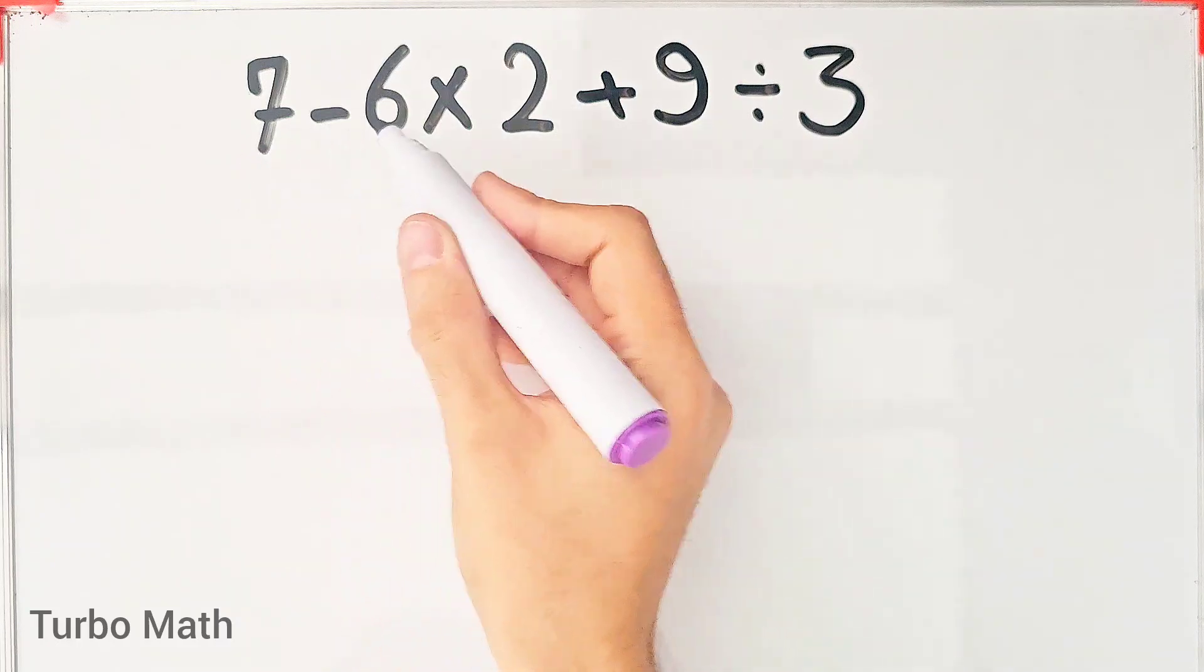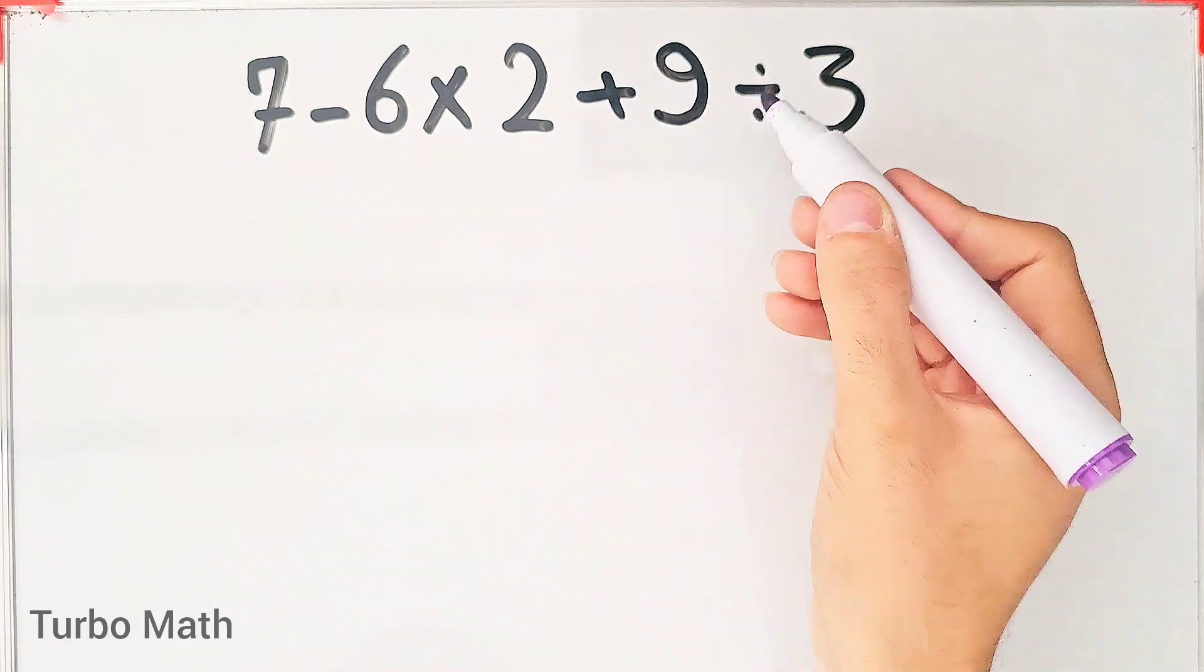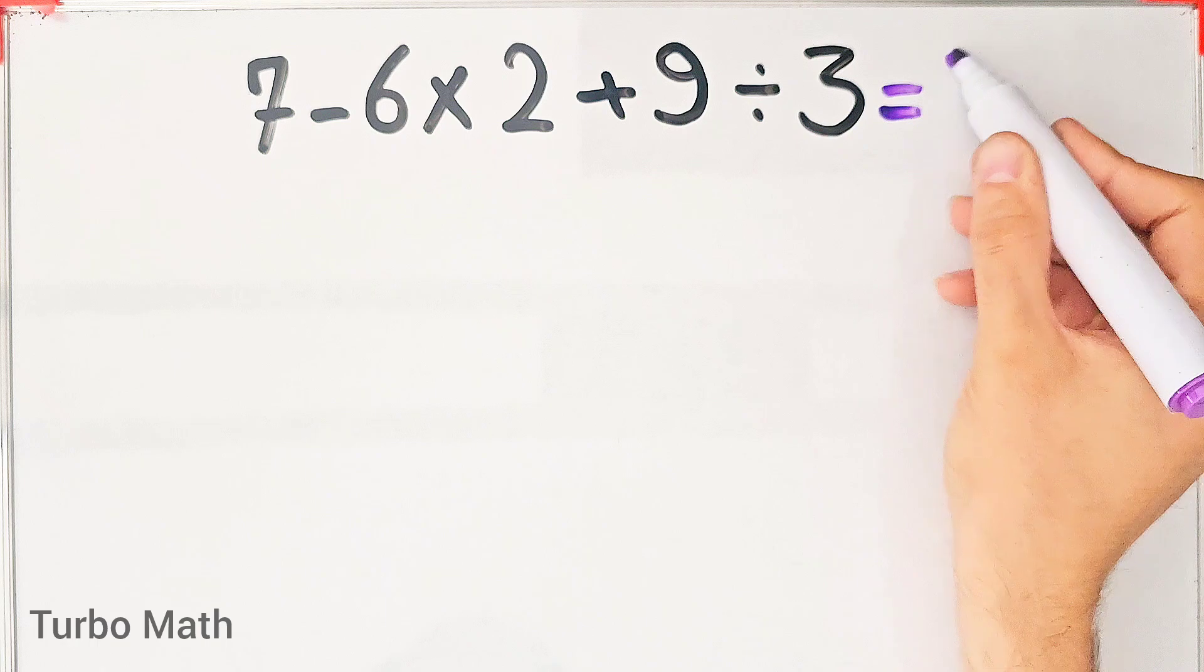7 minus 6 times 2 plus 9 then divided by 3. What is the answer of this question?